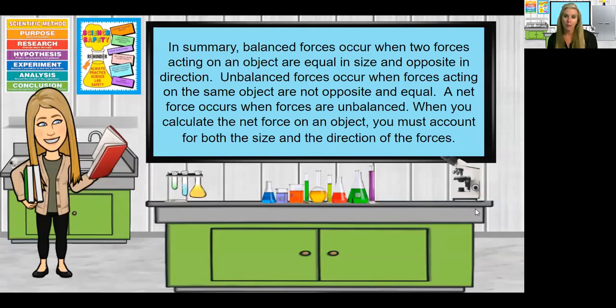In summary, balanced forces occur when two forces acting on an object are equal in size and opposite in direction. Unbalanced forces occur when forces acting on the same object are not opposite and equal. A net force occurs when forces are unbalanced. When you calculate the net force of an object, you must account for both the size and the direction of the forces.